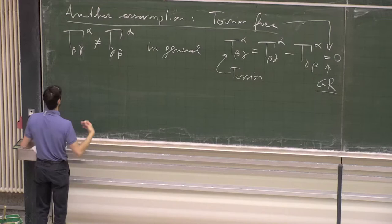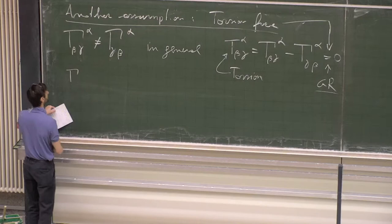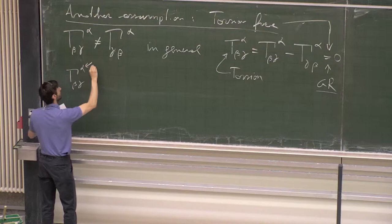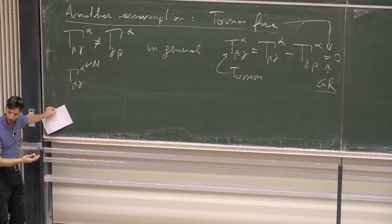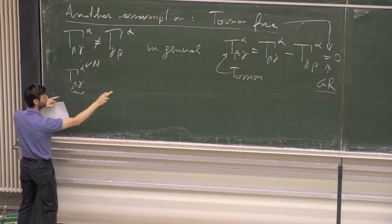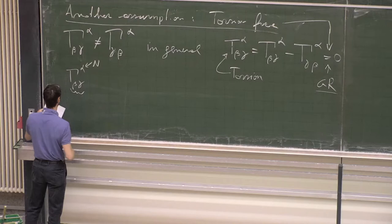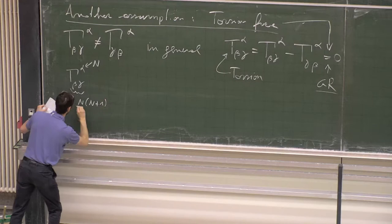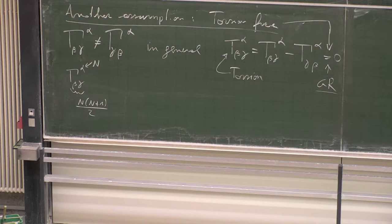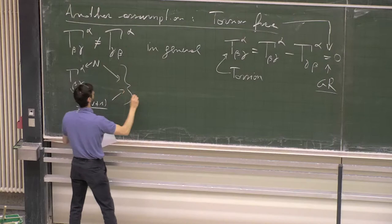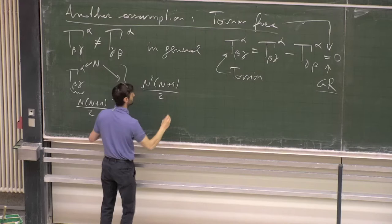What is the gain? Now that we have fewer degrees of freedom: the affine connection Γ^α_βγ has n possibilities for the upper index, and if we assume symmetry on the lower indices, we have n(n+1)/2 possibilities, giving us n²(n+1)/2 total independent coefficients.